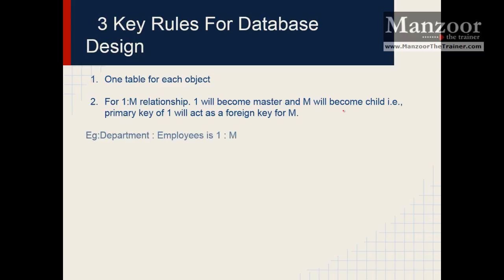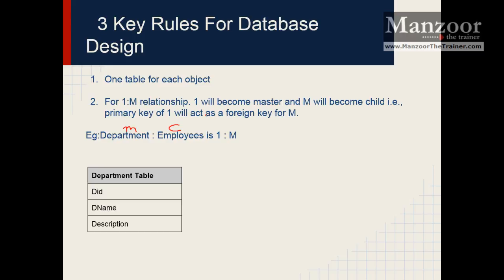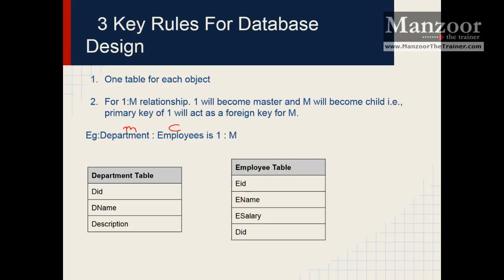Let us take an example: department and employee. Here we have a one-to-many relationship because one department can have many employees, whereas one employee cannot belong to many departments. So this side is true and this is false. If both were true, the relationship would be many-to-many, but since one is false, the relationship is one-to-many. Department becomes the master table and employee becomes the child table. The department table has department id, department name, and description. The employee table has employee id, employee name, and employee salary. The department id, which is the primary key of the master table, will become a foreign key in the employee child table.